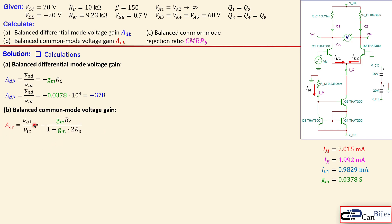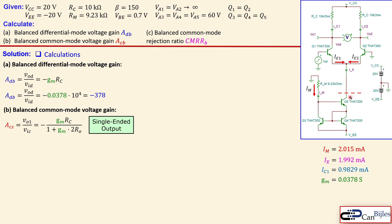The balanced common mode voltage gain starts from the single-ended expression for Vo1 over the common mode input voltage. In common mode operation, the same voltage is applied to both bases of Q1 and Q2. The expression involves ro, the output resistance looking into the collector of Q5. Let me first discuss what ro is.